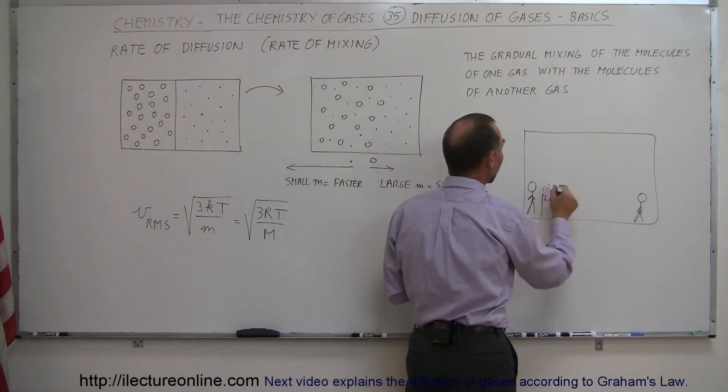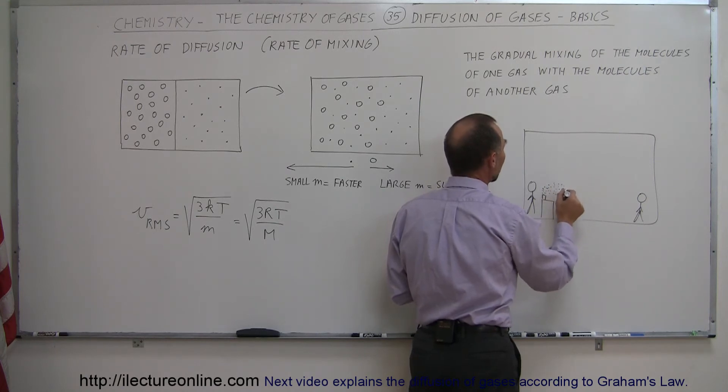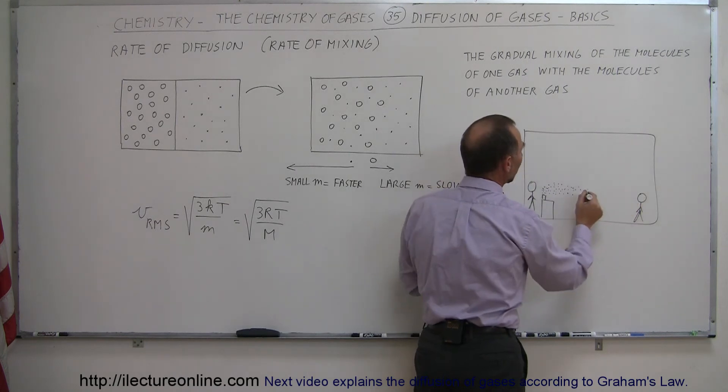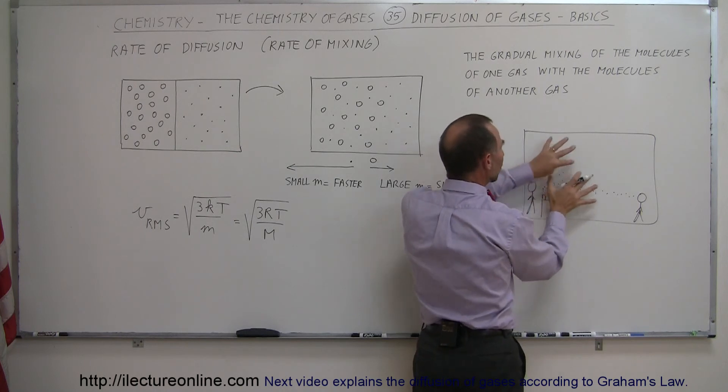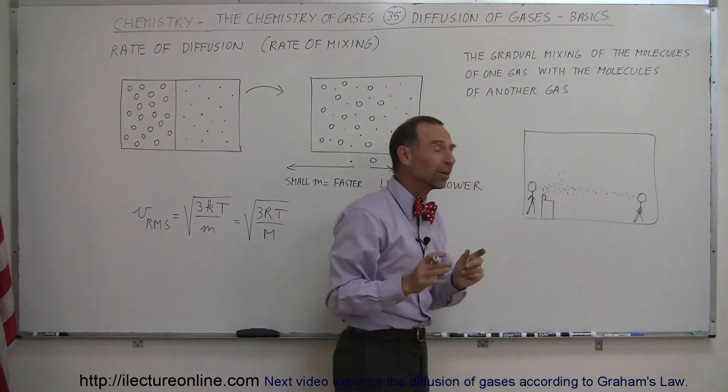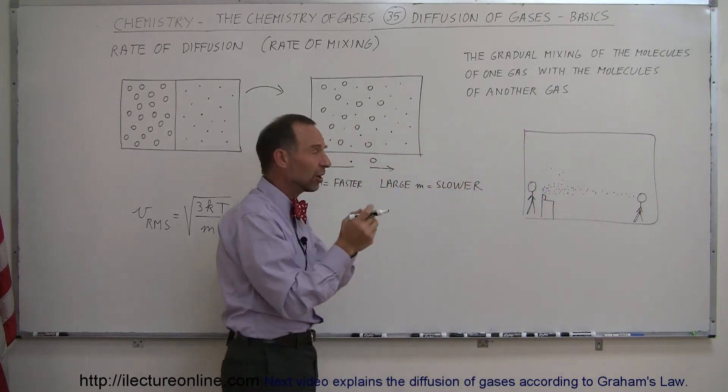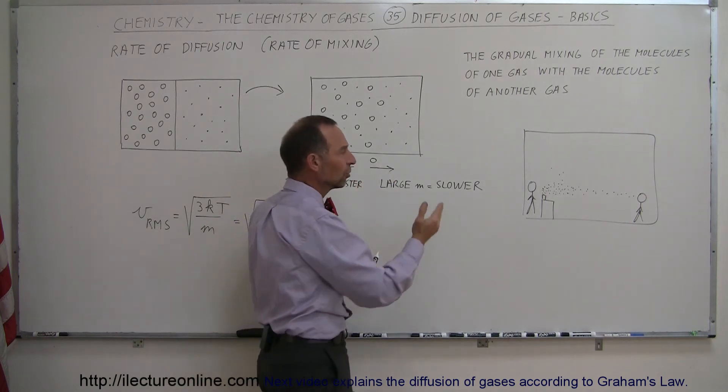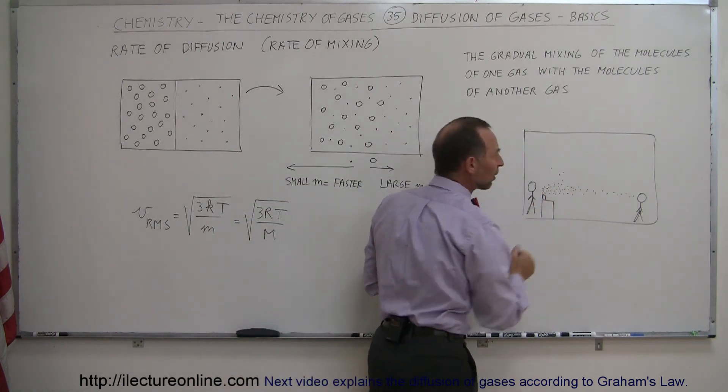It will take quite a long time before these molecules—let's say that you can smell them—travel all the way throughout the room and reach the other person where they can actually smell them. They tend to go in all directions but it takes a while. Remember the mean free path is not very large; they tend to bounce against molecules, so it takes a long time for molecules to move across the room.